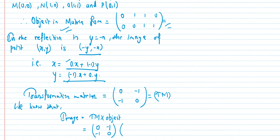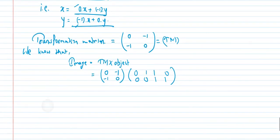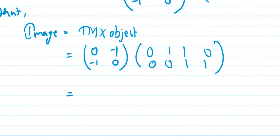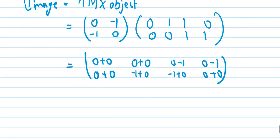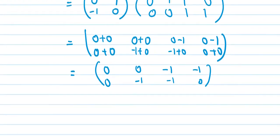The object matrix is [0, 1, 1, 0; 0, 0, 1, 1]. Multiplying: 0 times -1 plus 0 = 0; -1 plus 0 = -1; -1 plus 0 = -1; 0 minus 1 = -1; 0 plus 0 = 0; 0 plus 0 = 0. The result matrix elements are 0, 0, 0, -1, -1, -1, -1, 0. This is the value of the image.